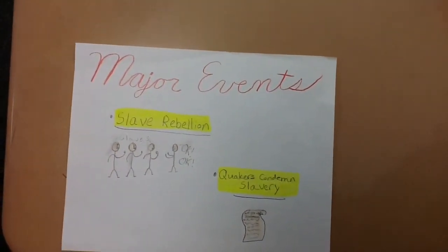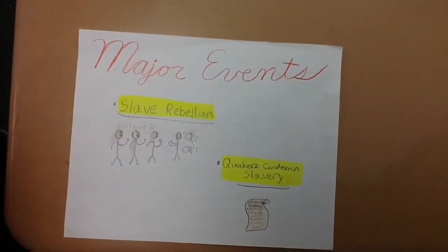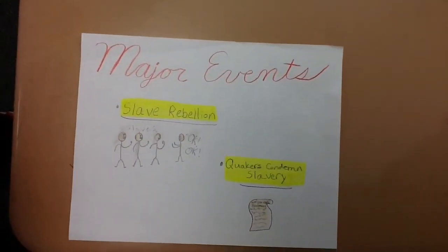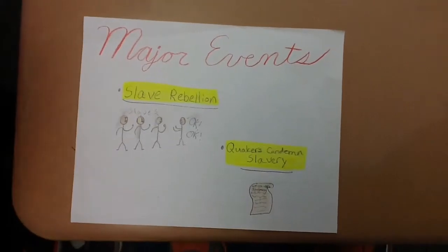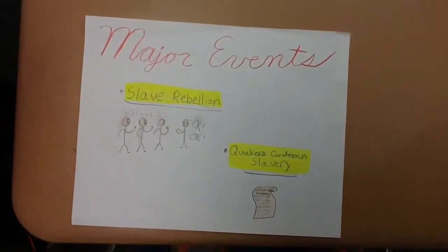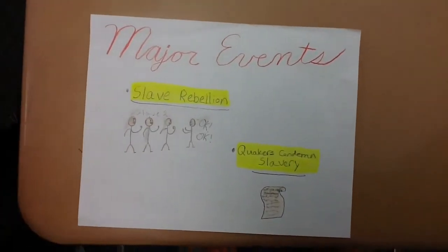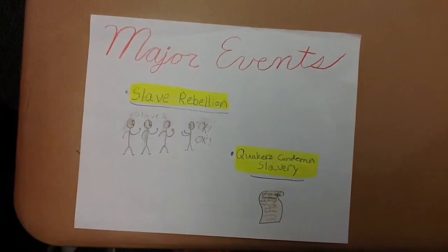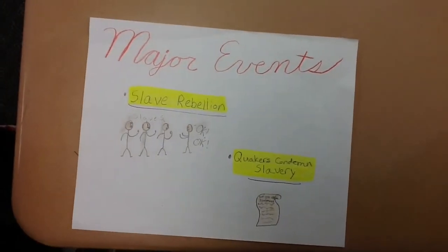Major events were slave rebellion, which took place in 1712 when some slaves rebelled, and Quakers condemned slavery by having people sign petitions and write statements.